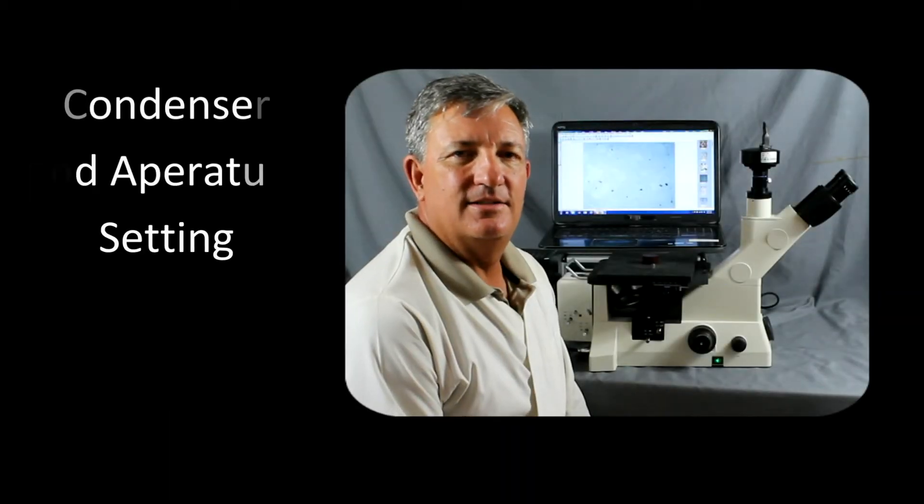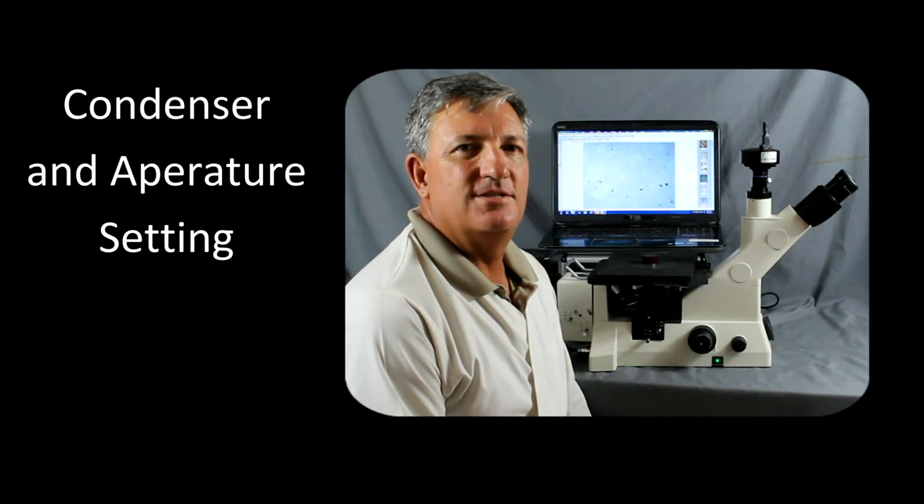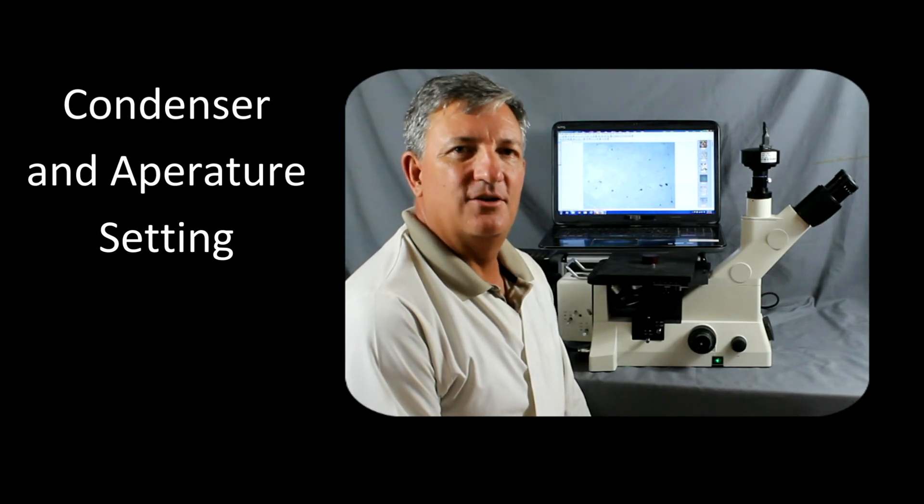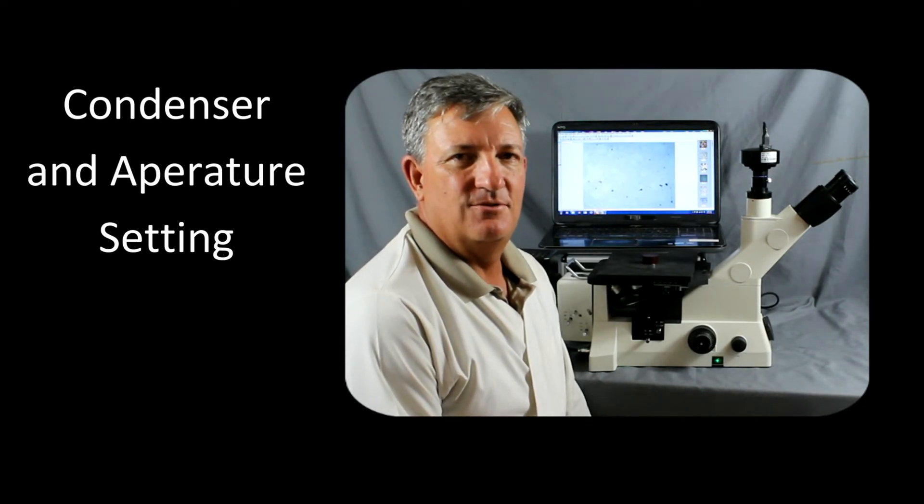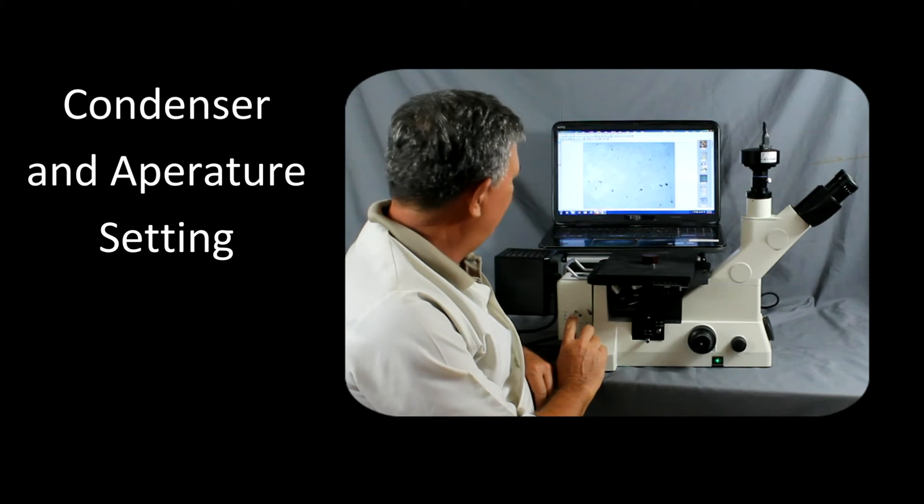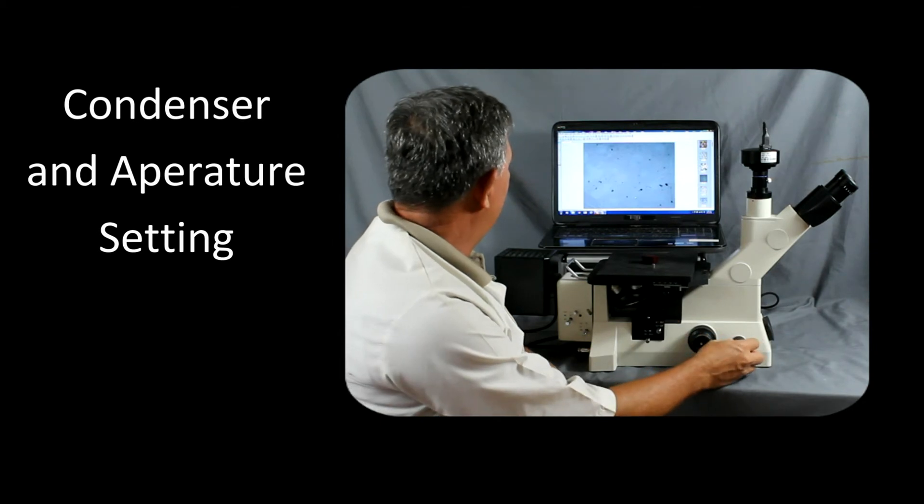After we've optimized the light path, what we want to do is we want to now defocus or diffuse the light. We can do this a number of ways. One is we can add a ground glass filter or rotate the turret to the ground glass turret. We can also use this condenser lens adjustment here. By pressing this in, that will defocus the light or make it a little bit more uniform.